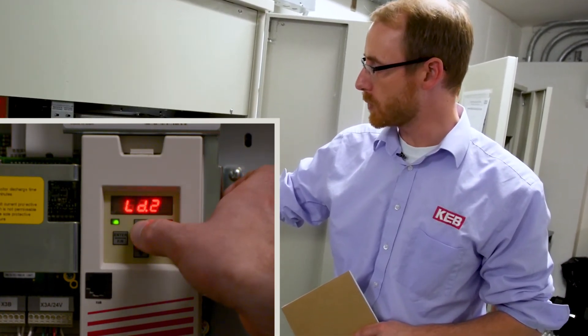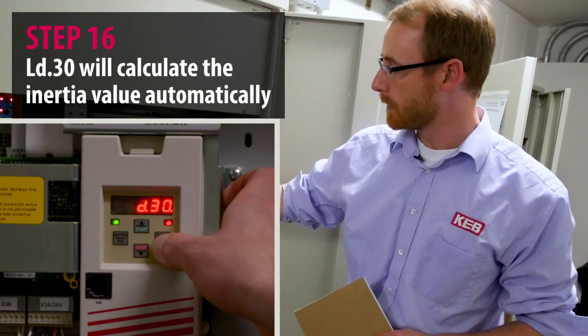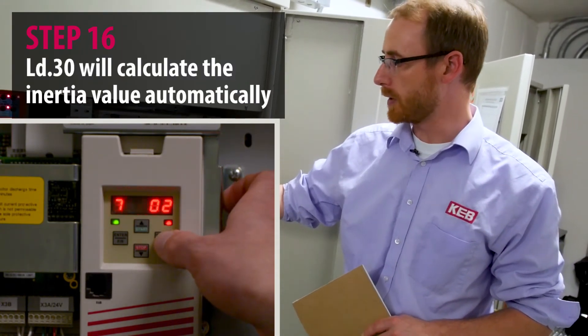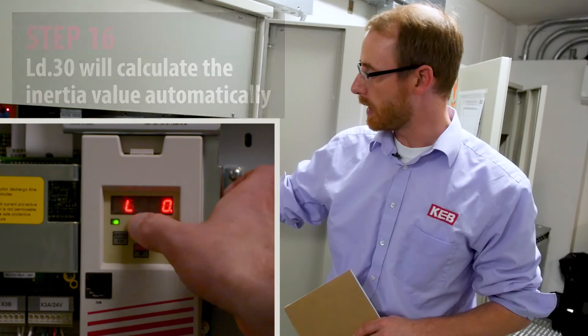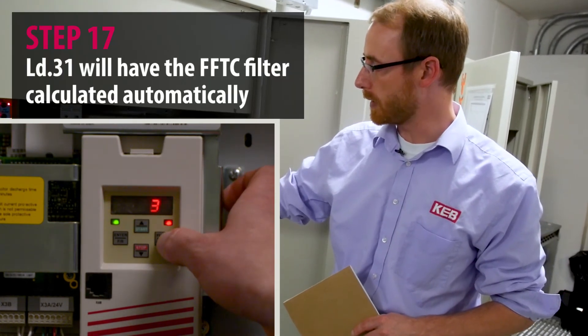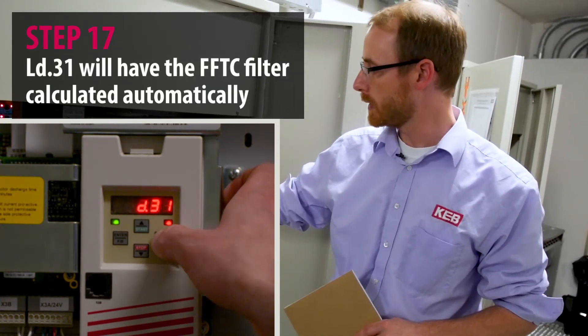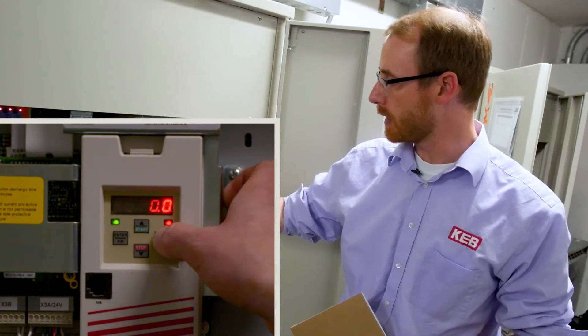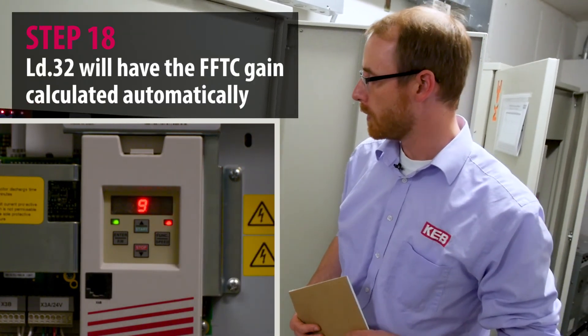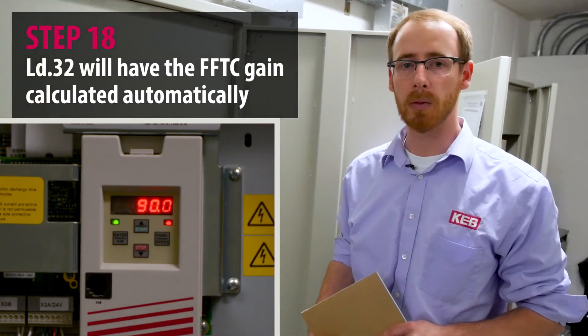Once the LD29 value has been entered, the LD30 will have the inertia value calculated. And the LD31 value for the feed forward torque control filter will be preset. And the LD32 value for the feed forward torque control gain will be preset.